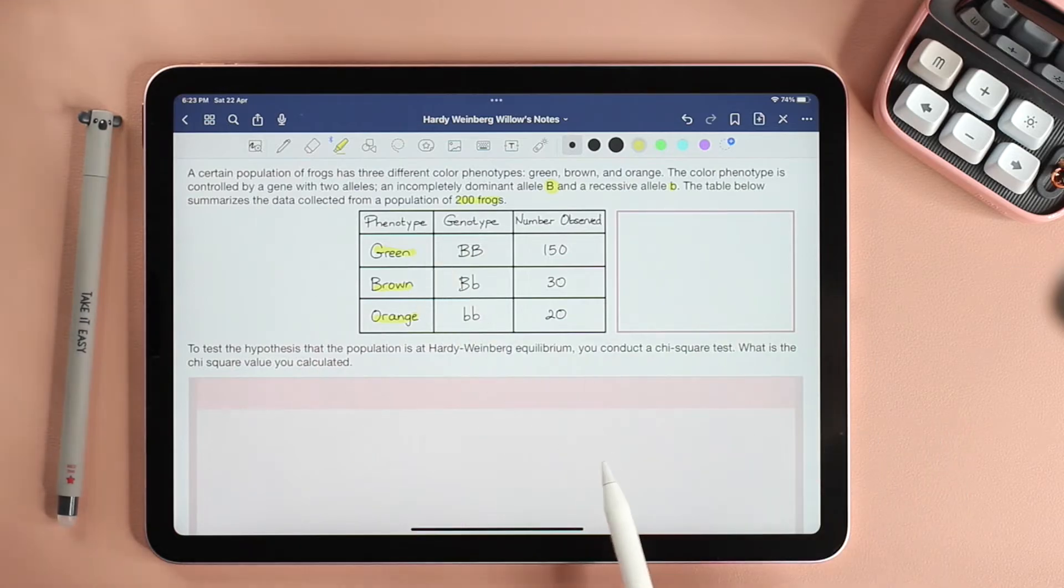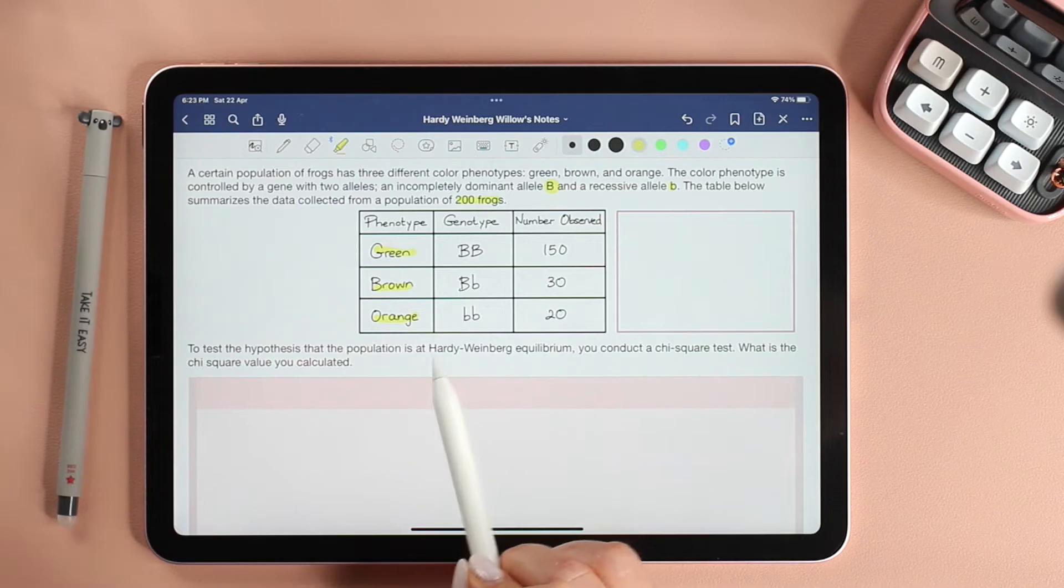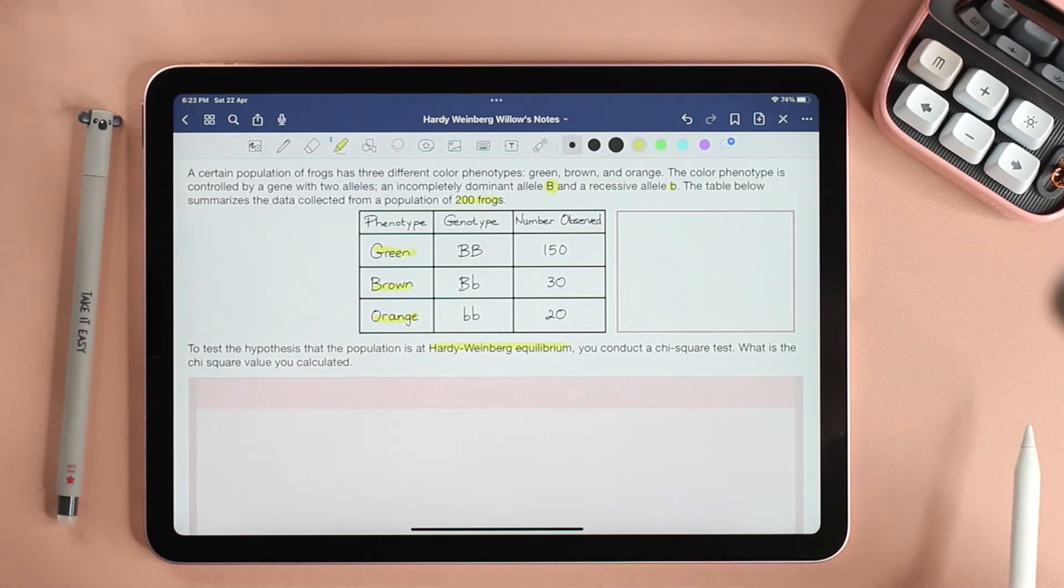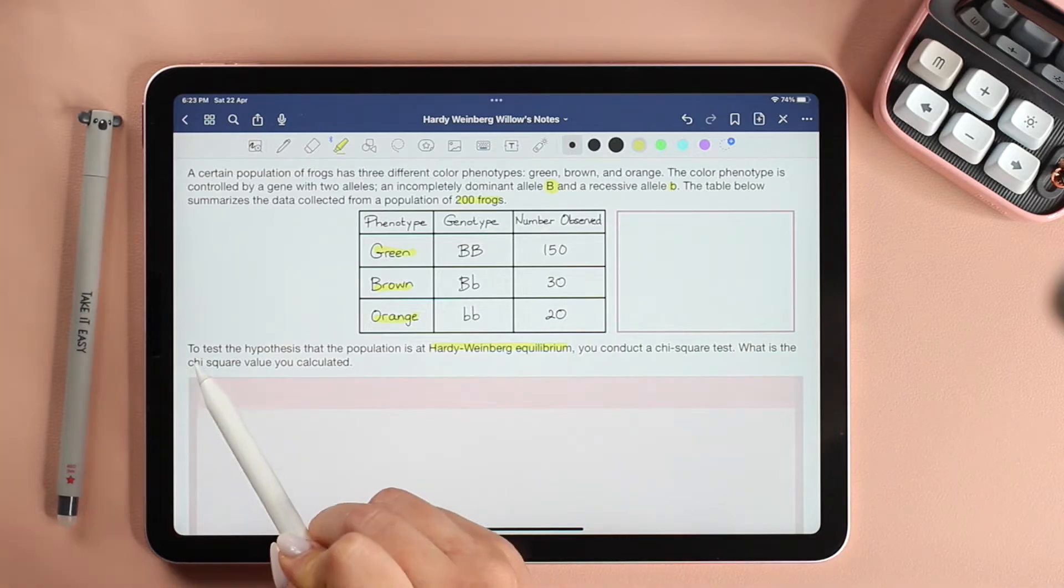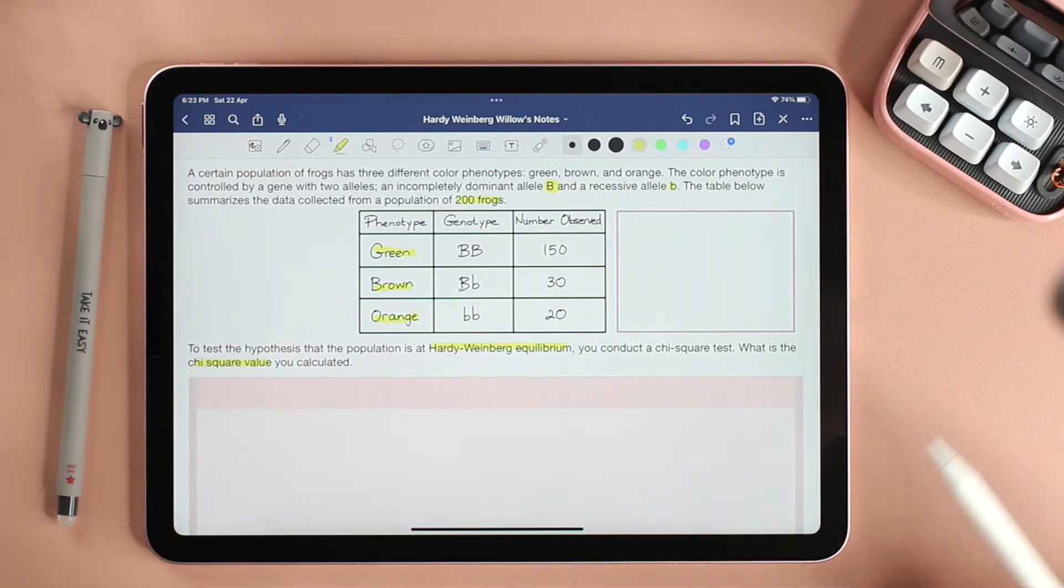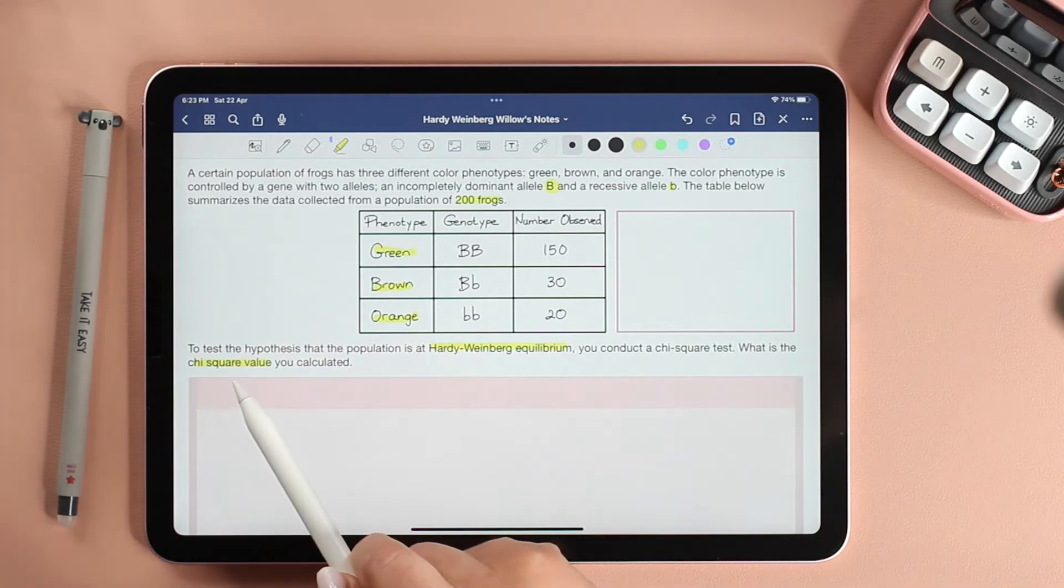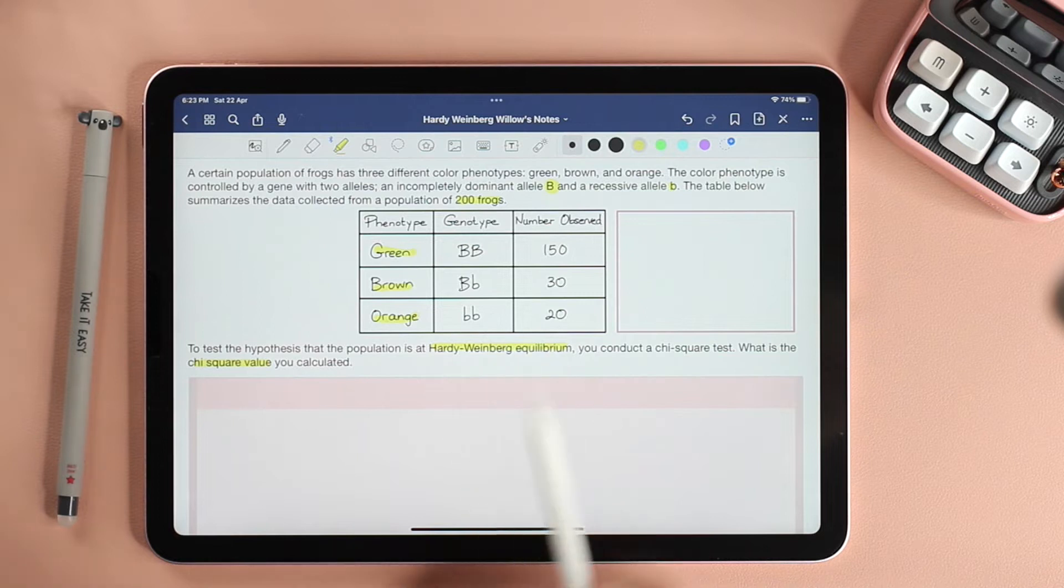To test the hypothesis that the population is at Hardy-Weinberg equilibrium, you conduct a chi-square test. What is the chi-square value you calculated? So the aim is to calculate the chi-square assuming that the population is in Hardy-Weinberg equilibrium.